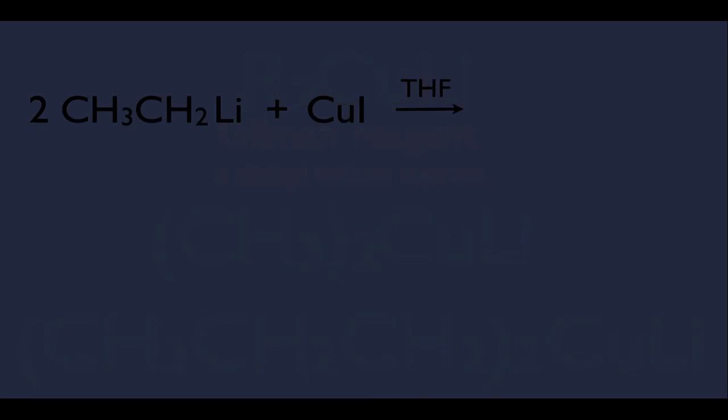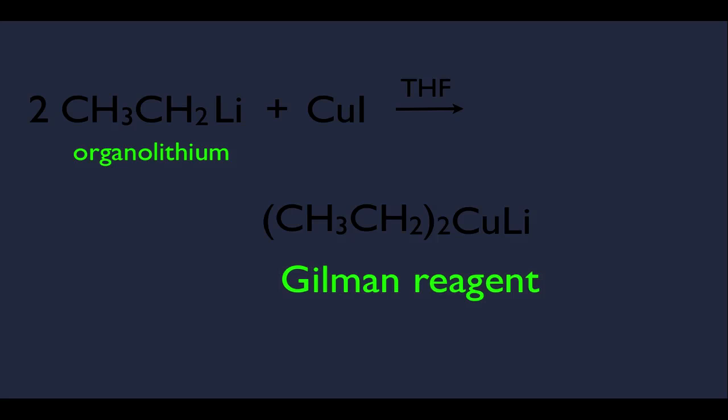Let's start with how we make Gilman reagents, and then we'll look at how they are used in coupling reactions. To make a Gilman reagent, we start with two organolithium reagents and react them with CuI in the solvent THF. The product is our Gilman reagent, with LiI as a side product. We're not concerned about the mechanism — we just need to know how to make them for synthesis problems.